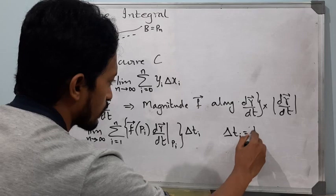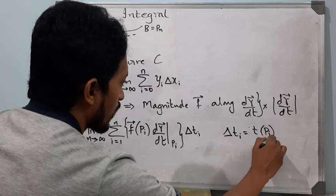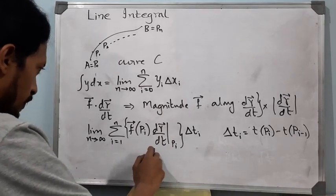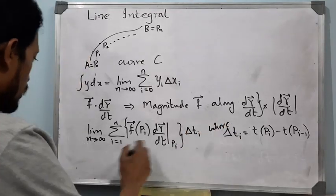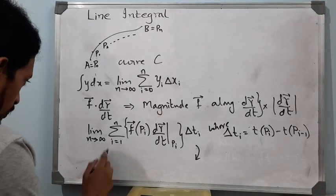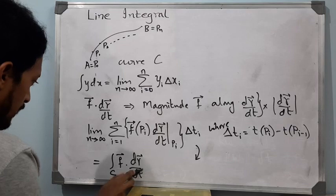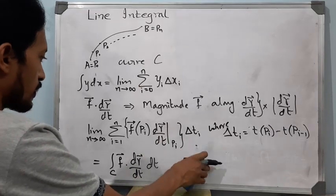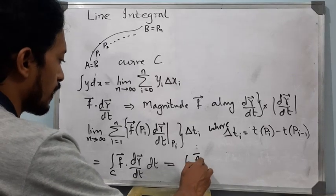Here Δtᵢ is the value T at Pᵢ minus t at Pᵢ₋₁. This integral would give us what we call as the line integral. So this is equal to integral over C of f·(dr/dt) dt, which is equal to integral over C of f·dr.